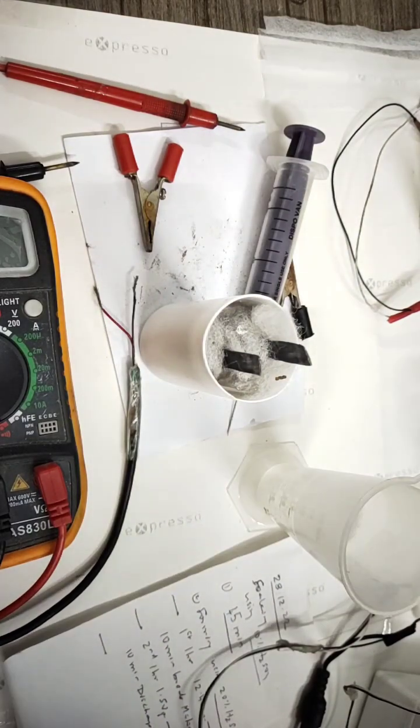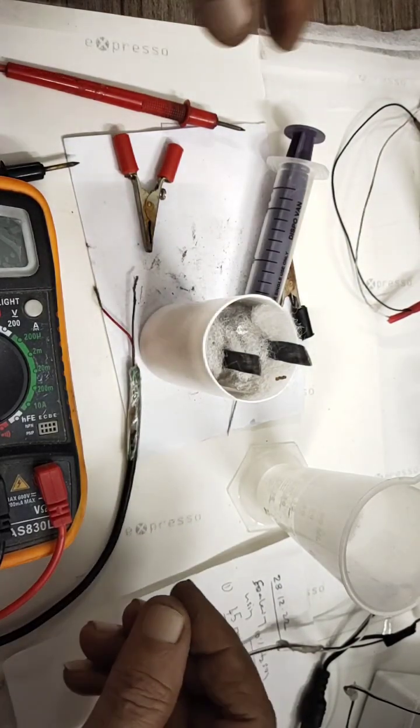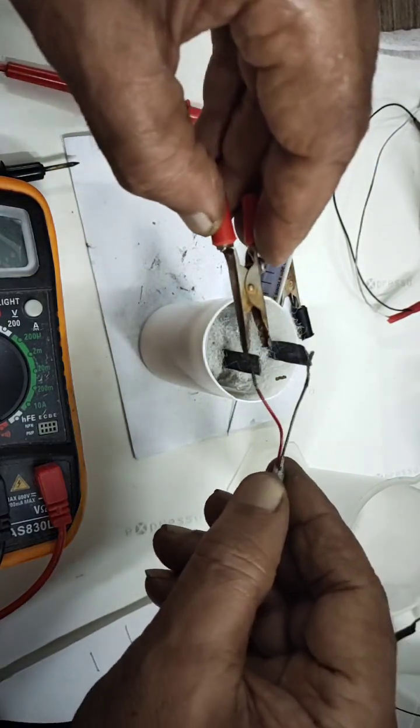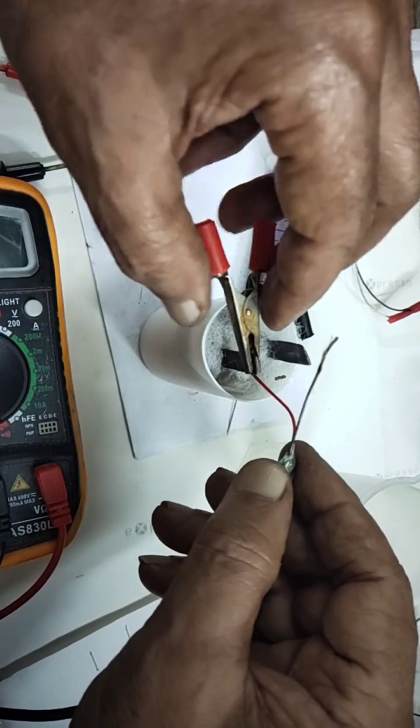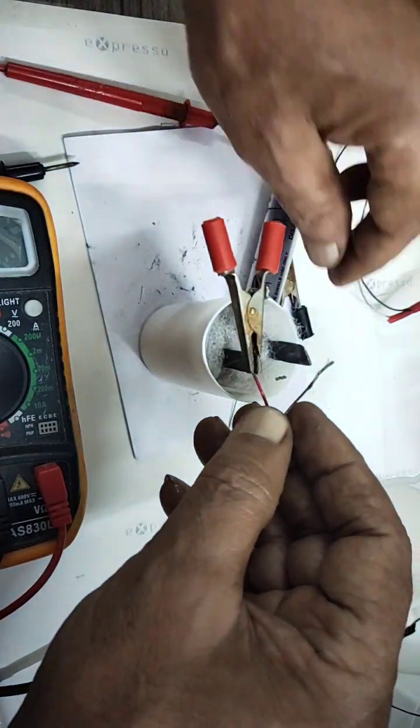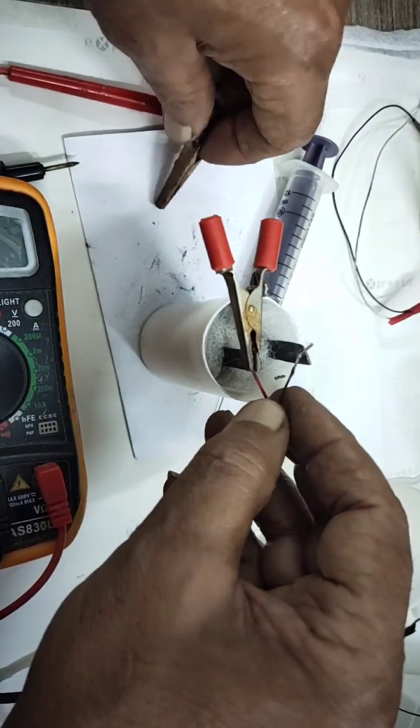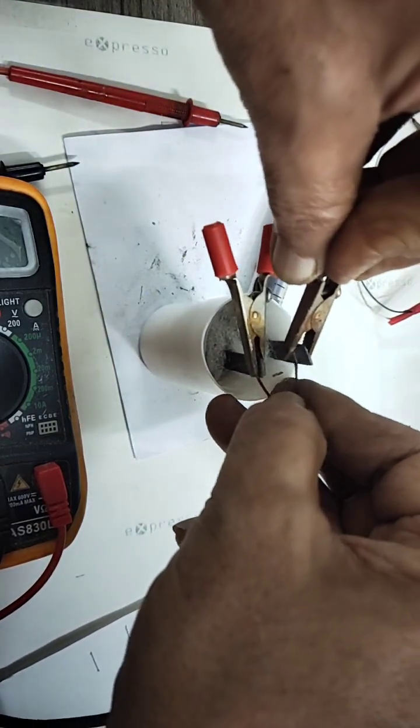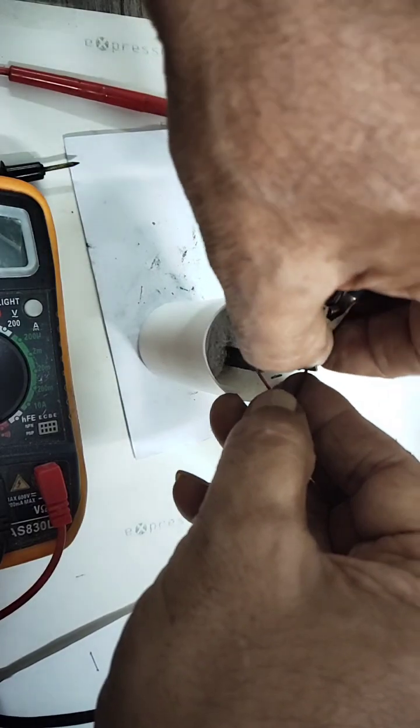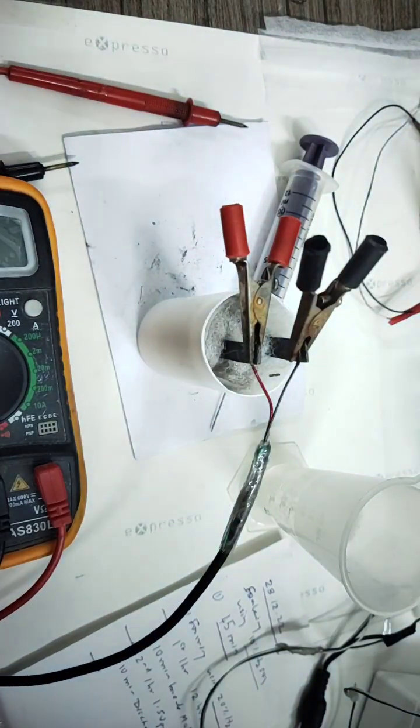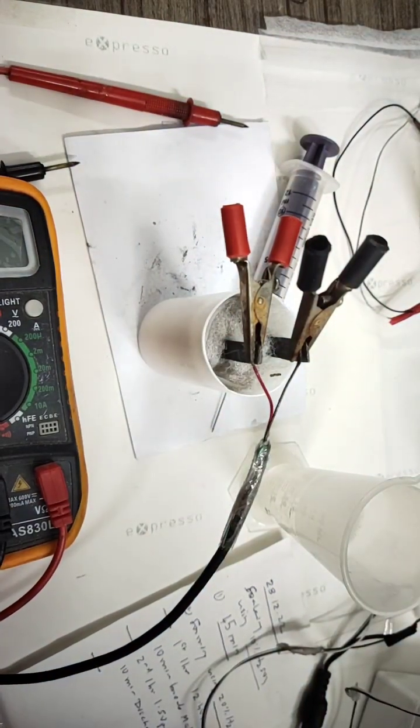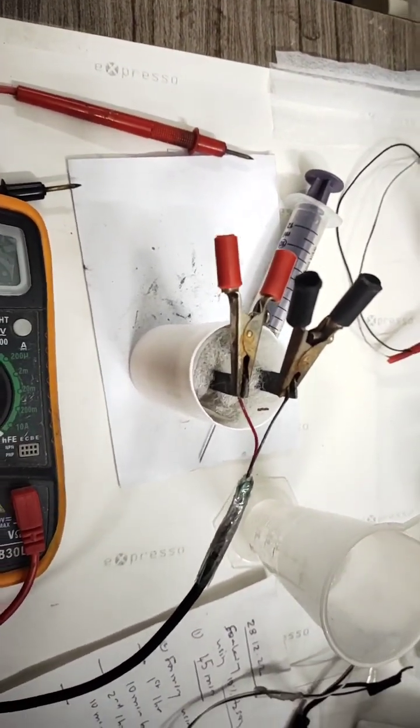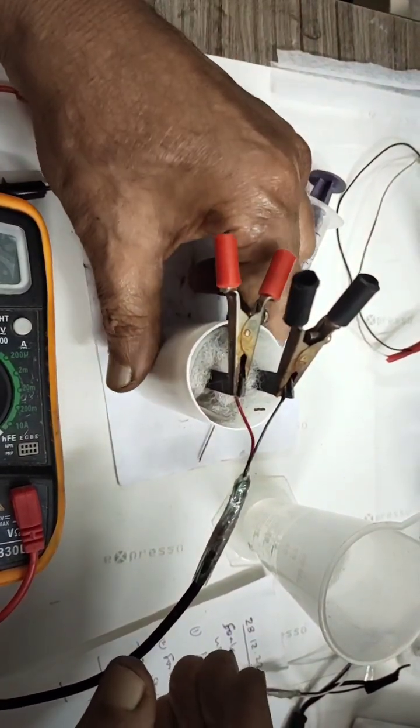Now we have to charge for at least half an hour, this will be the final charging. Again we will connect the outside DC supply of 5 volt 0.5 or 1 amps. This will be a final charging from outside source. We will switch on the DC supply, there will be gas bubbles which can be seen, that is the indication of charging.